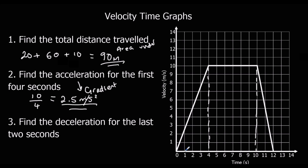For every one across it goes up 2.5 — that's the gradient, which is 2.5 metres per second squared acceleration. Now find the deceleration for the last 2 seconds. For every one it goes across, it goes down 5. So the deceleration is 5 metres per second squared.